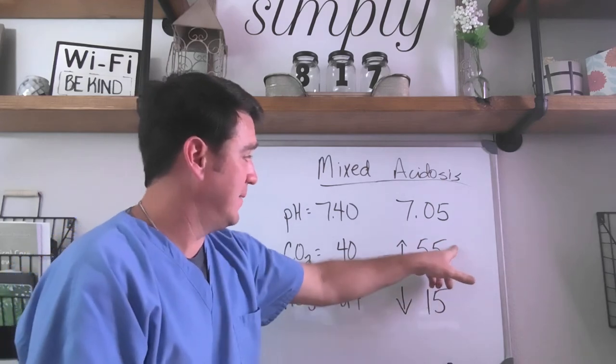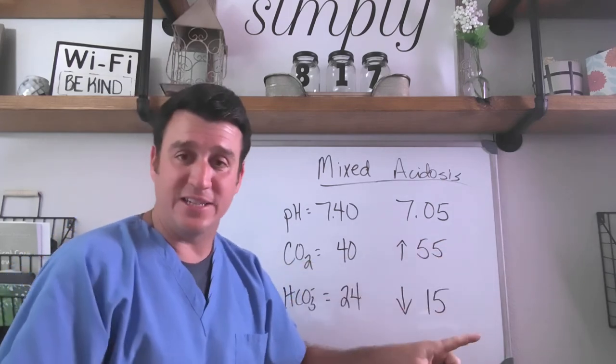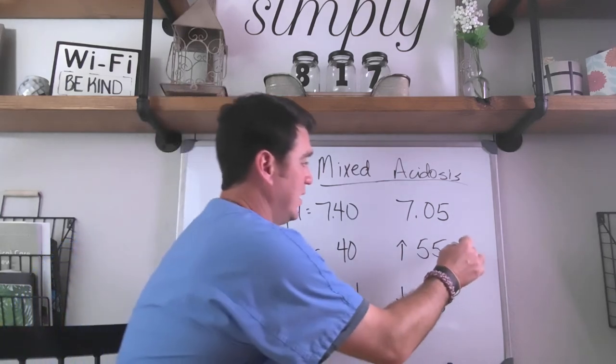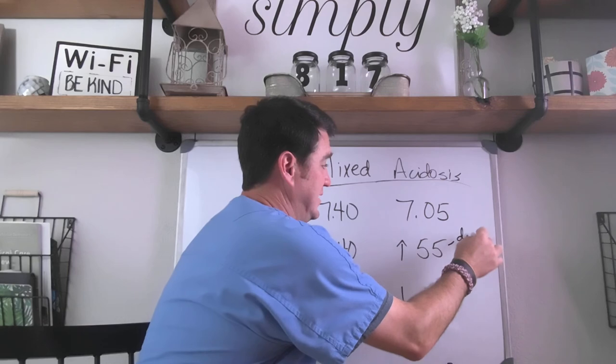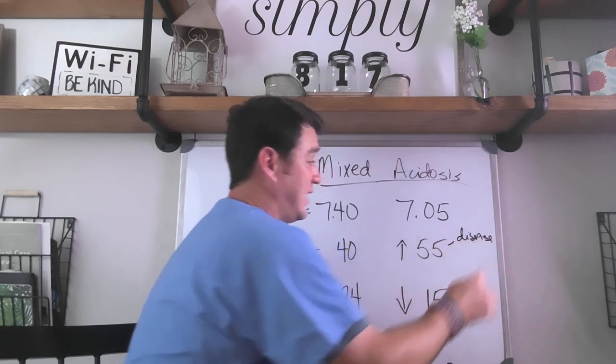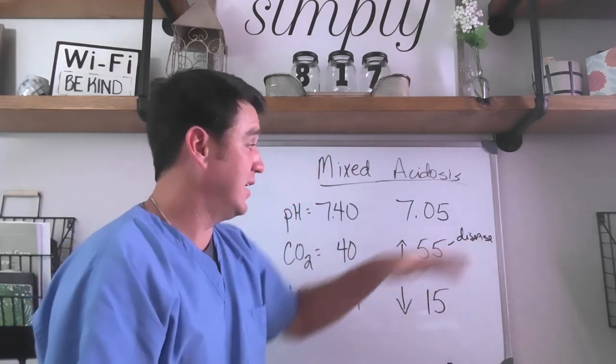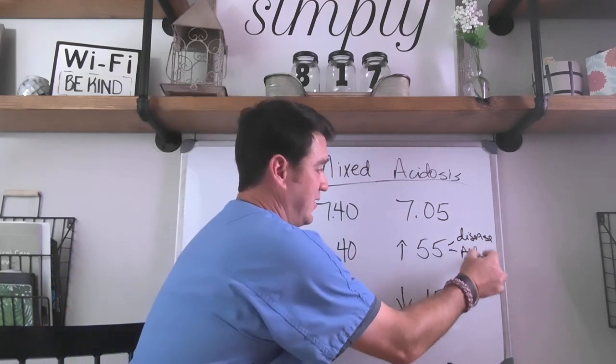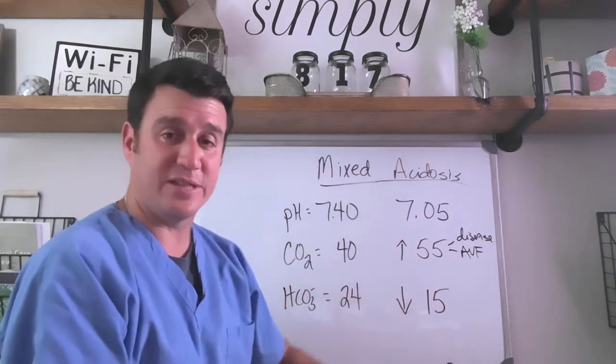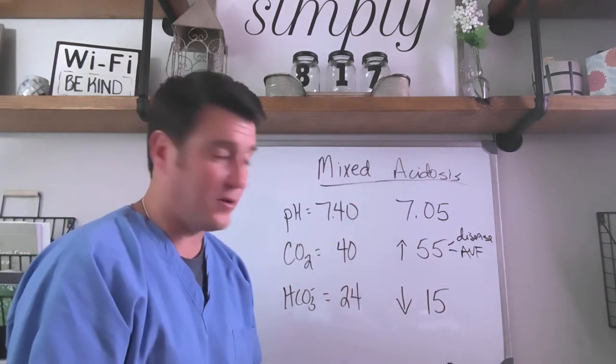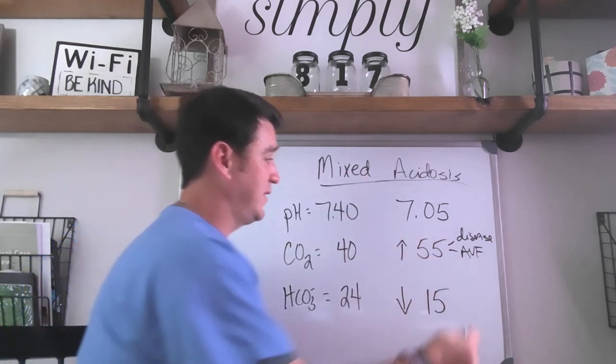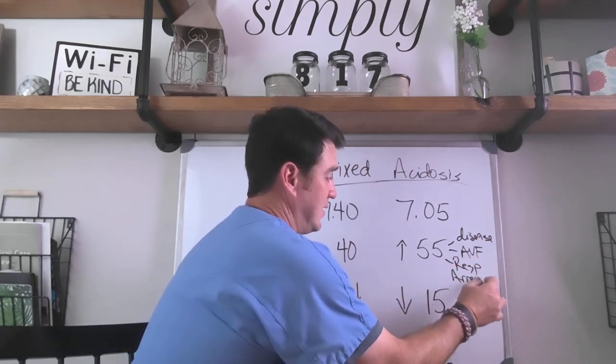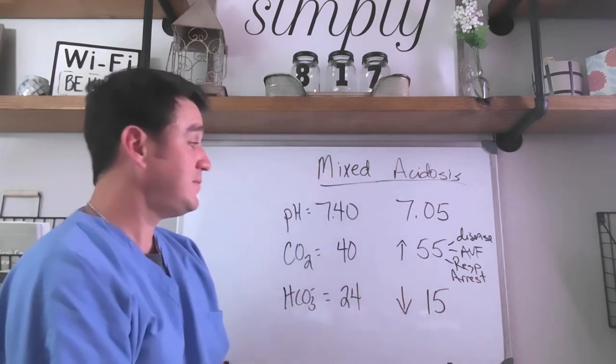We know that diseases, pulmonary diseases, can cause gas impairment. That could cause your CO2 to go up. So certain disease process, especially in the later stages or the moderate to severe stages of it, you'll see CO2 rising. We also call this acute vent failure. When our CO2 goes up and our pH goes down, acute ventilatory failure. So this patient could be in acute vent failure. This could also follow a respiratory arrest.